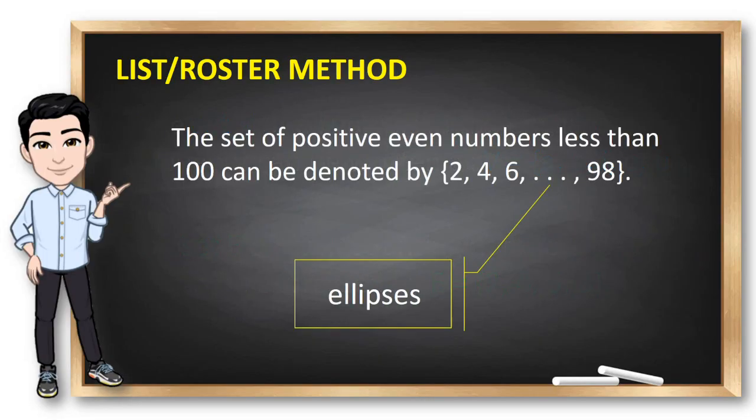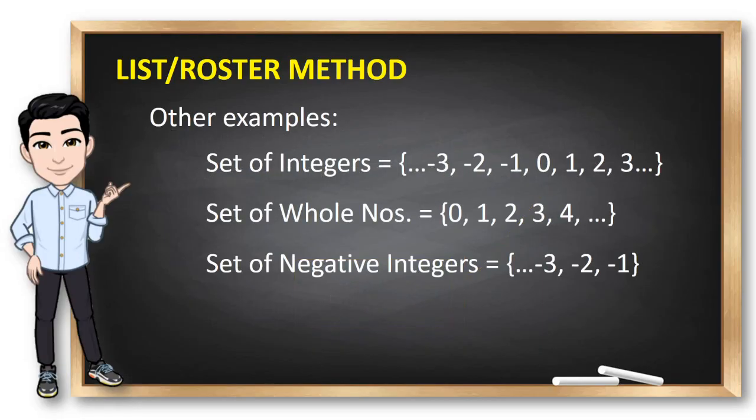Sometimes, the roster method is used to describe a set without listing all its members. When the elements of a set are too many, list some elements first then use ellipses. But you need to make sure that the general pattern of the elements is obvious. You need to establish the pattern of the elements first. Ellipses can be placed in different order depending on the pattern of the set. For instance, in this example, the set of integers is written using side-by-side ellipses. In the set of whole numbers, you could start with 0 and end it with ellipses. In the set of negative integers, since this set is extending to negative infinity, then it should start with ellipses.